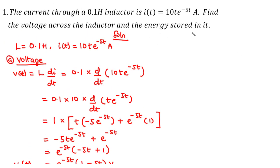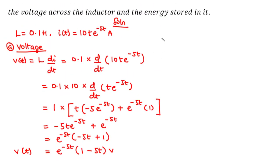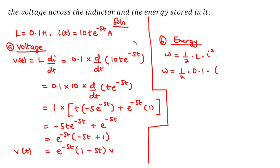Next we find the energy stored in the inductor. The energy stored is given by w = ½·L·i². From the question, L = 0.1 henries and i = 10·t·e^(−5t). Substituting, we have w = ½ × 0.1 × [10·t·e^(−5t)]².